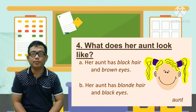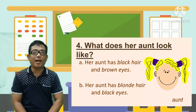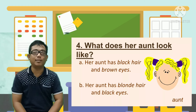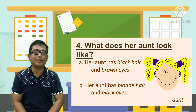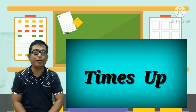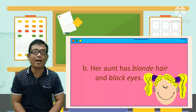Number 4. What does her aunt look like? A. Her aunt has black hair and brown eyes. B. Her aunt has blonde hair and black eyes. The correct answer is Letter B. Her aunt has blonde hair and black eyes.